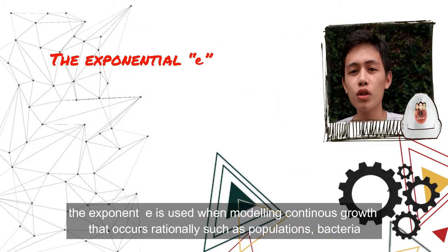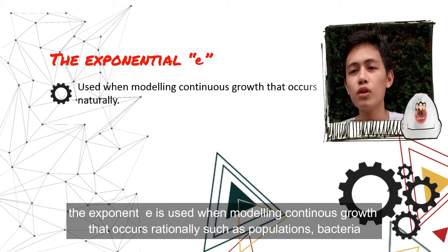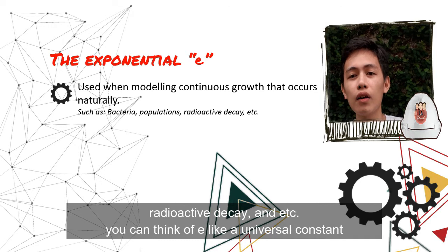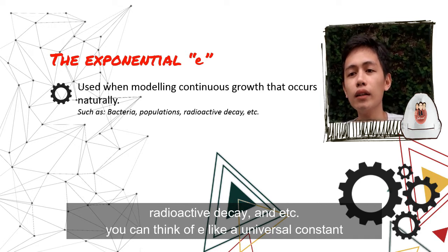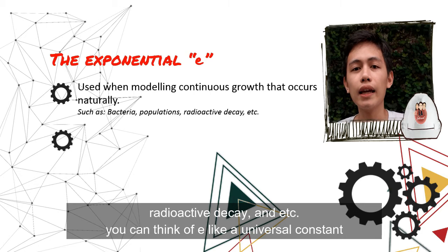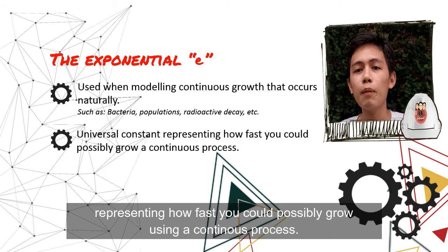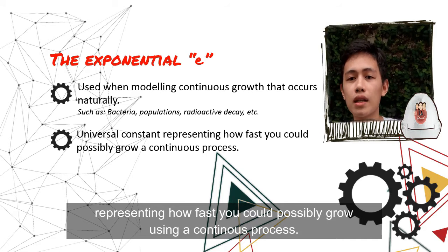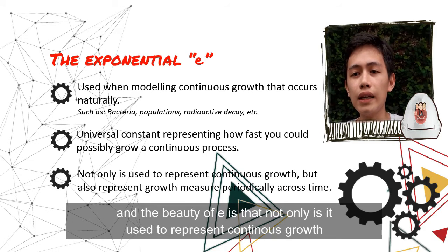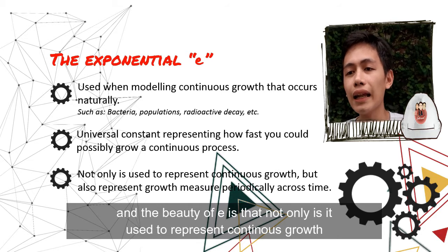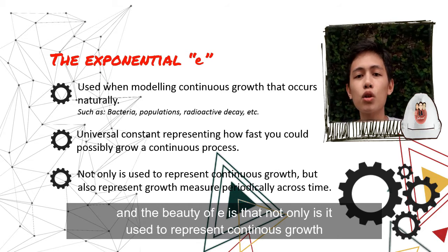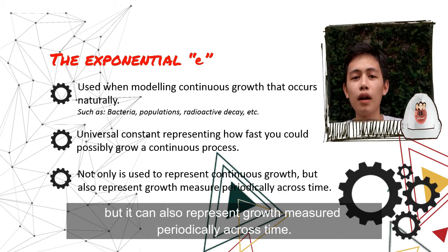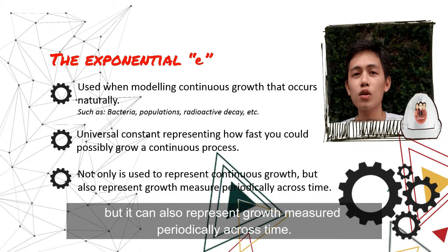The exponent e is used when modeling continuous growth that occurs naturally such as populations, bacteria, radioactive decay, etc. You can think of e like a universal constant representing how fast you could possibly grow using a continuous process. And the beauty of e is that not only is it used to represent continuous growth, but it can also represent growth measured periodically across time.